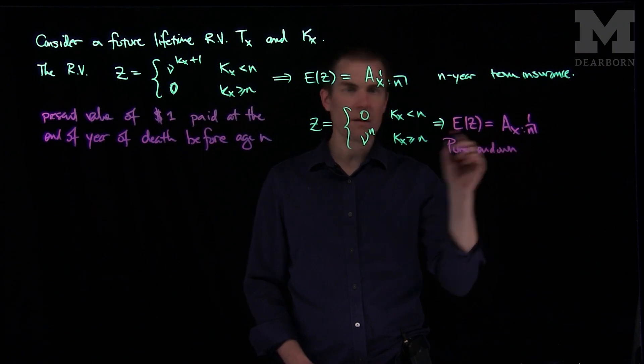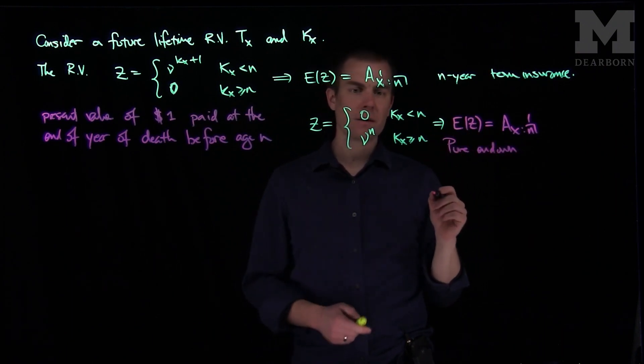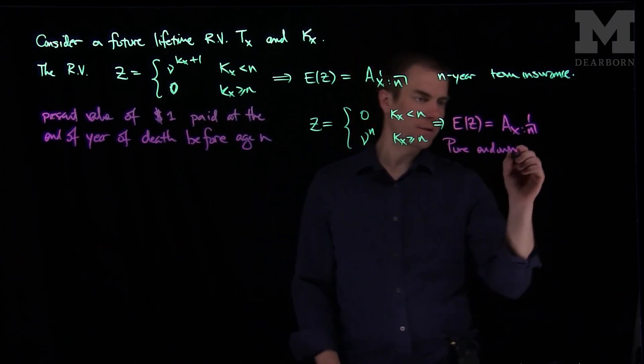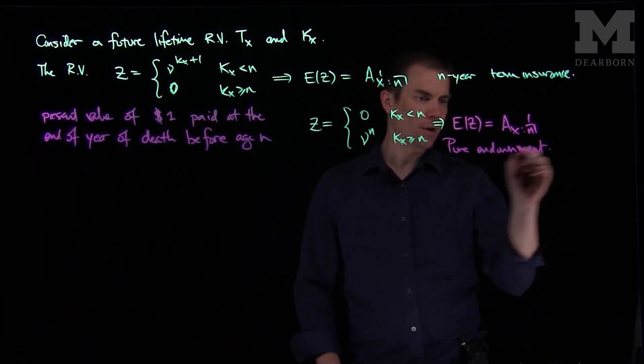So if you survive to age n, if x survives to age n, then what happens is you get a payment of one dollar. This is the expected present value of a pure endowment insurance.